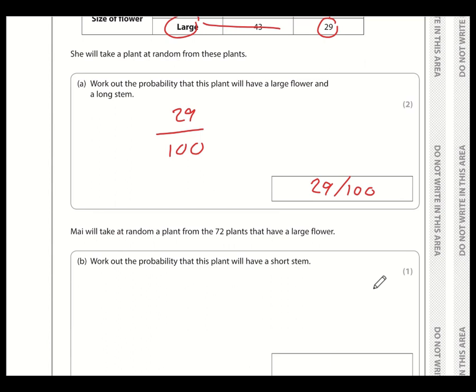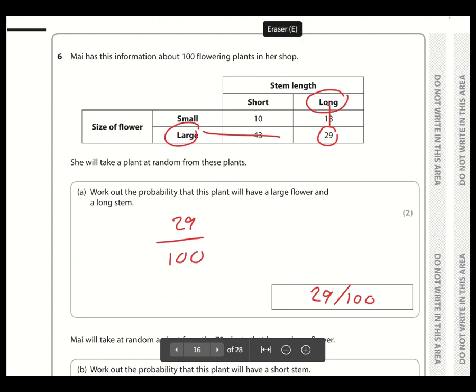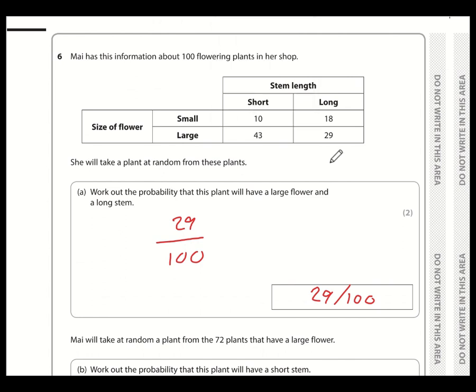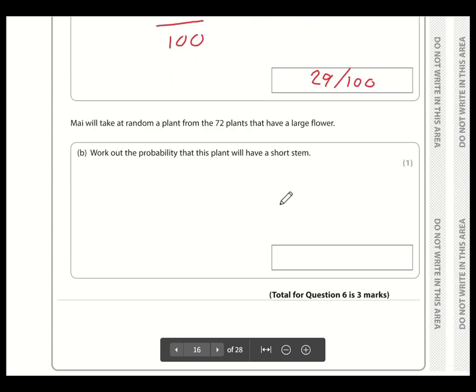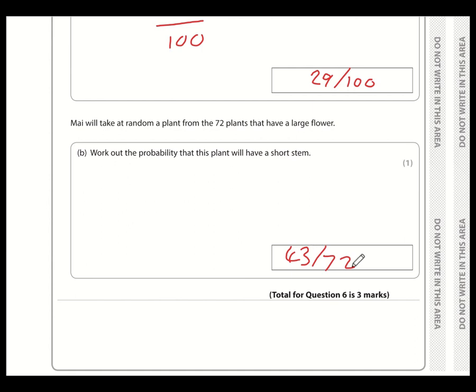Okay, the next part. Mai will take at random a plant from the 72 that have a large flower. So let's just get rid of some of this. Okay, so he's taking a plant at random from the 72 that have a large flower. So this, these two numbers add up to 72. So there's my 72. So that could say that's just the total there. And what is the probability that it will have a short stem of the 72, 43 have a short stem. So the probability is simply 43 over 72. And again, this fraction cannot be simplified because 43 is a prime number.